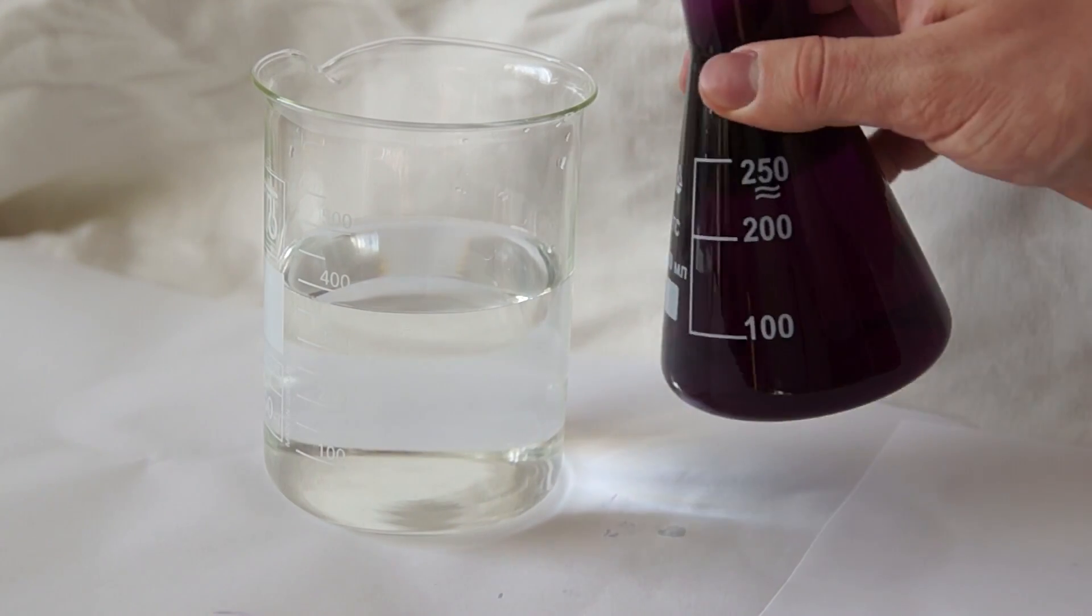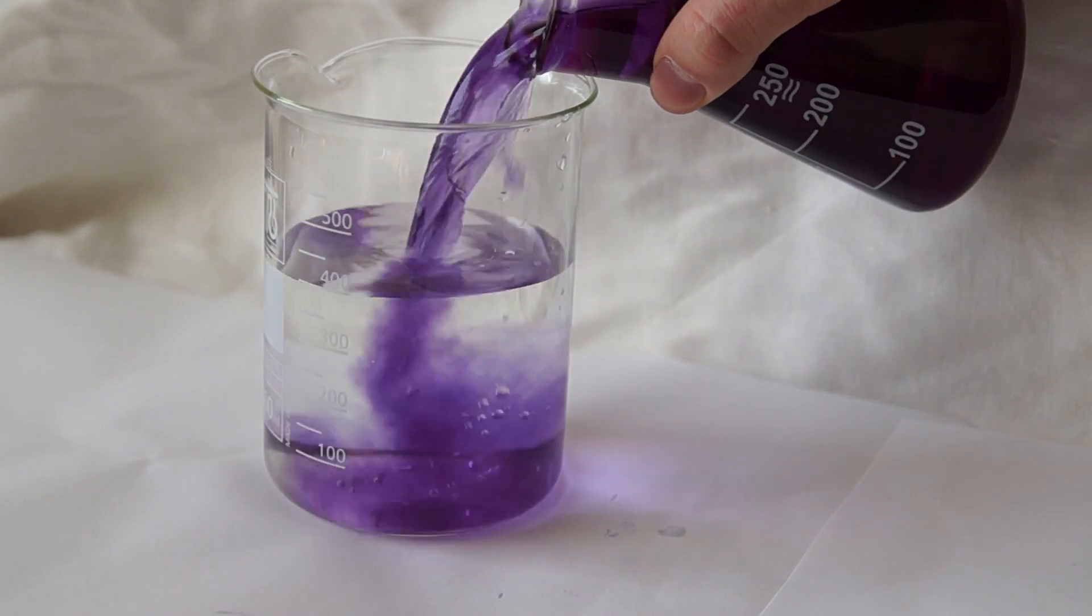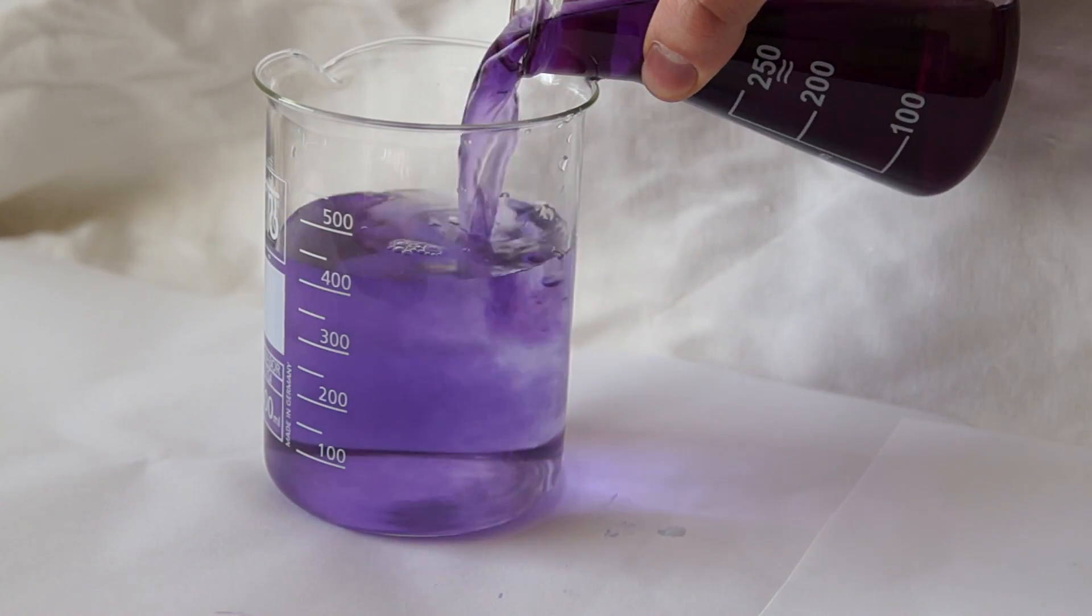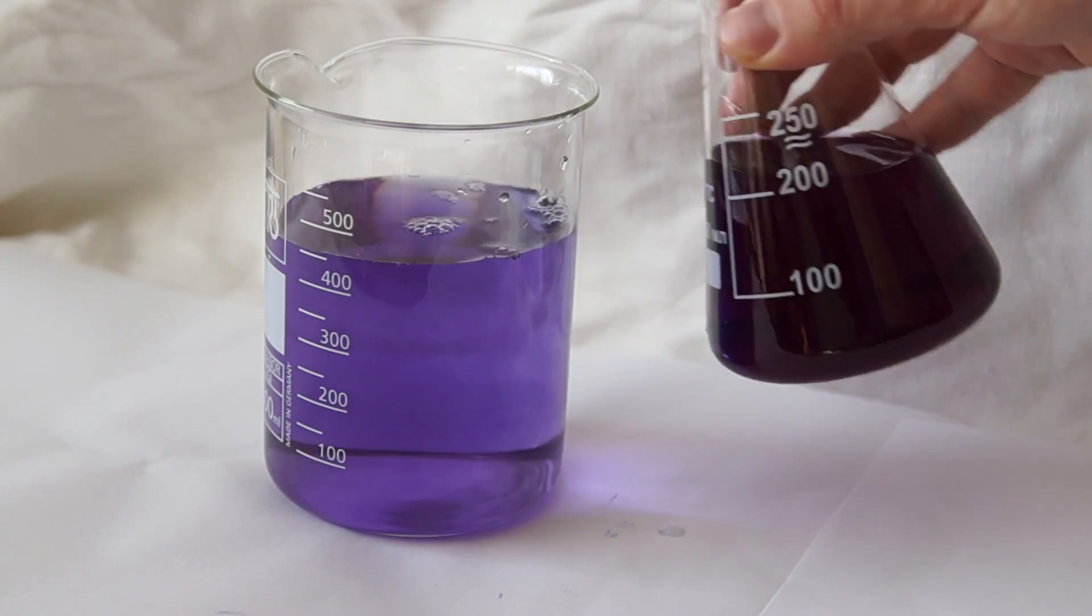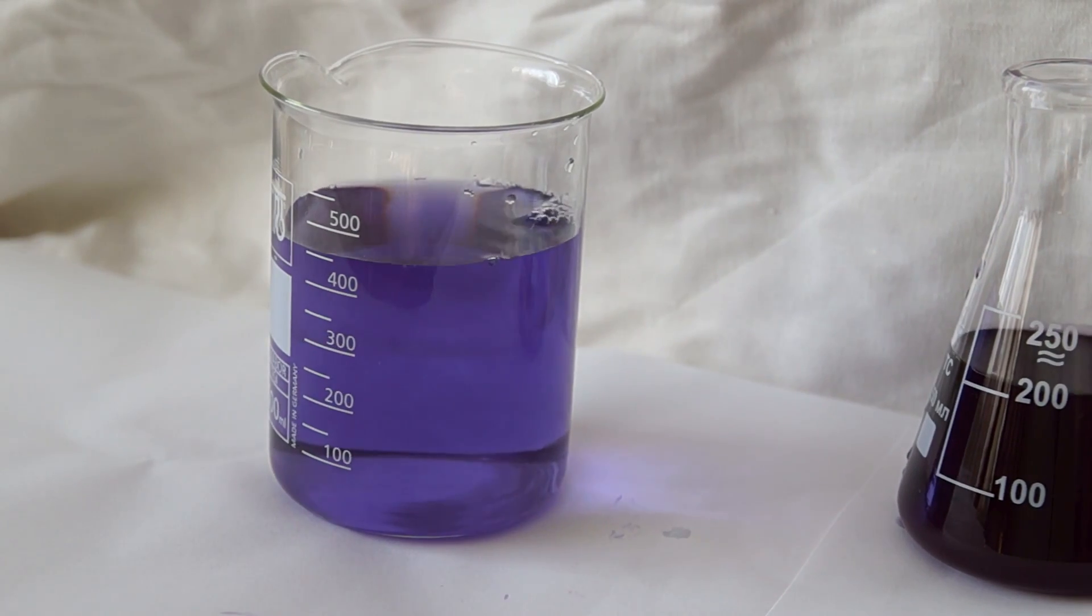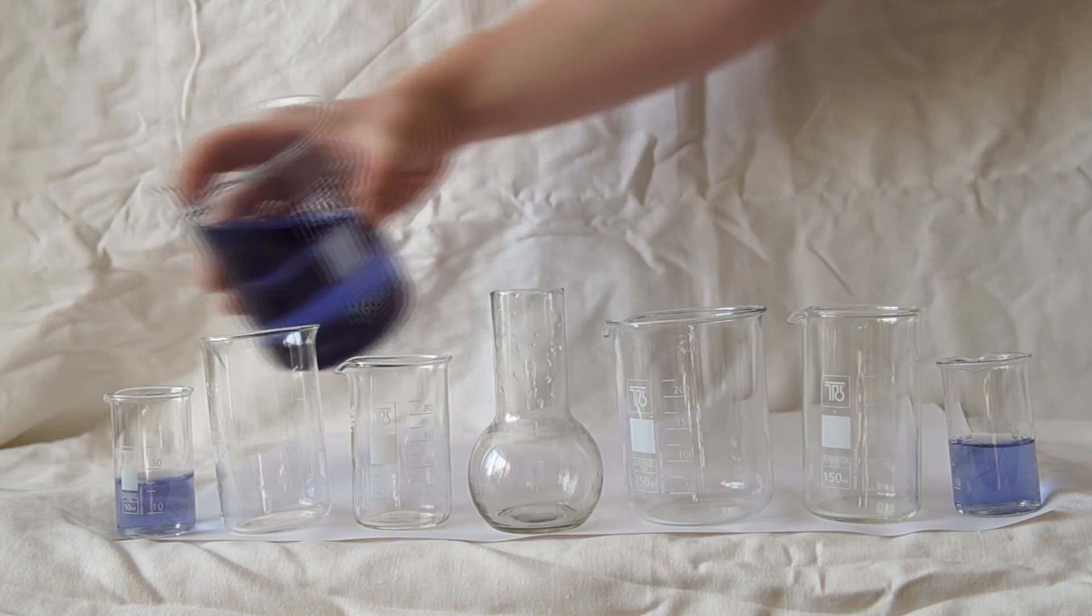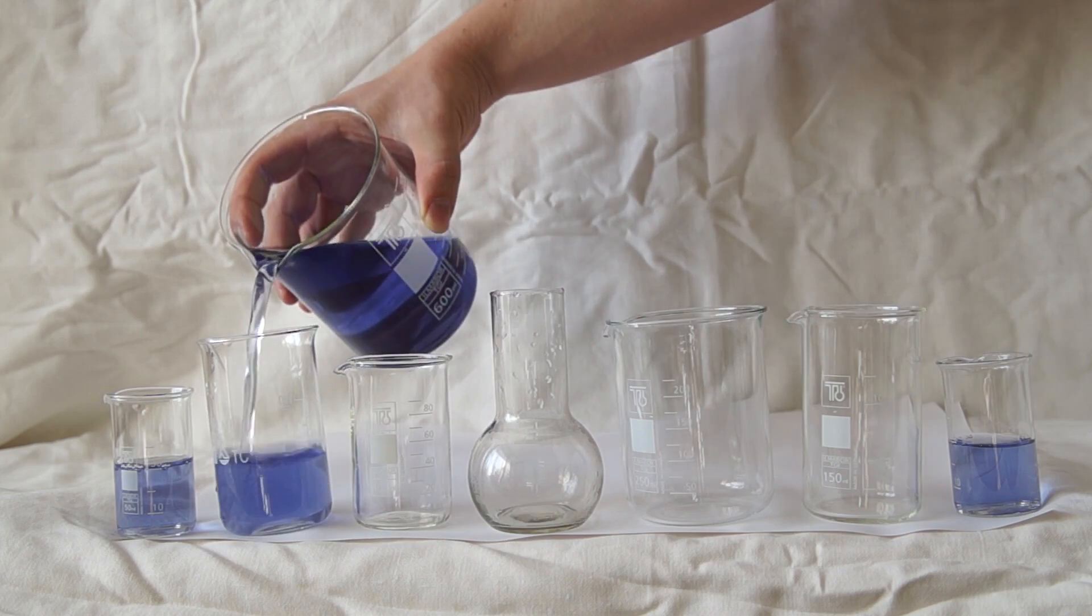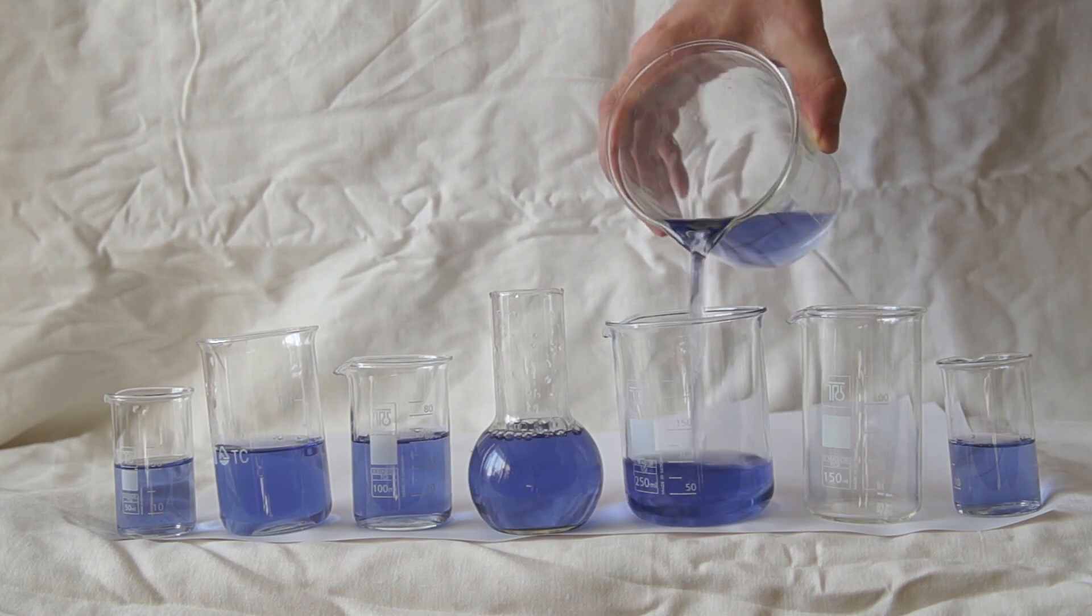In order to show its effect, I will dilute it in water several times for the solution to not be so saturated. Now I will pour this indicator into seven different beakers to show you what colors the substance contained in a red cabbage can acquire.